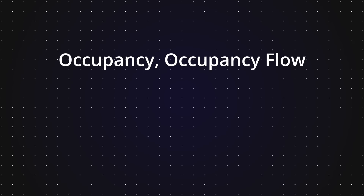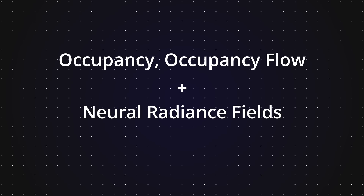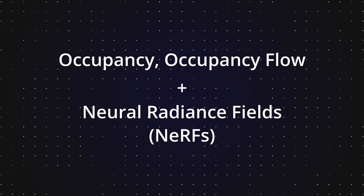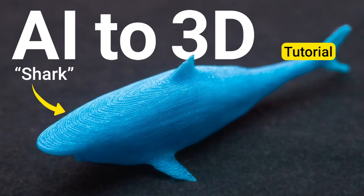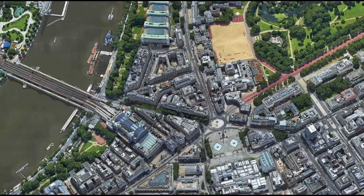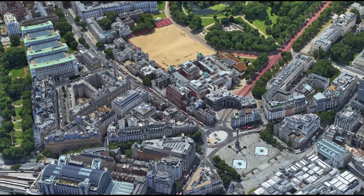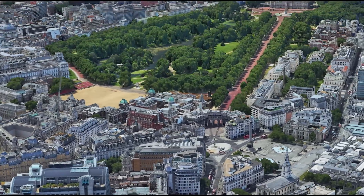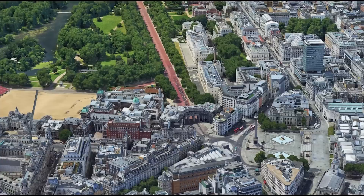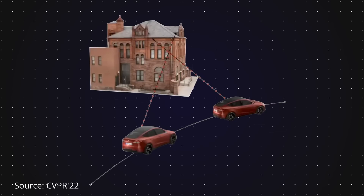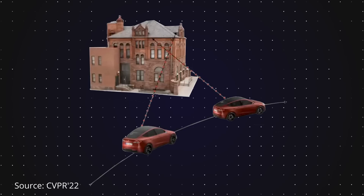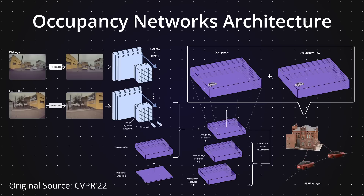In addition to occupancy and occupancy flow, Tesla also adopted neural radiance fields, known as NERFs, a technology used to reconstruct scenes from multi-view images. Tesla's extensive fleet is able to gather precise camera data over time, and this data facilitates the creation of detailed 3D reconstructions to further refine their system.